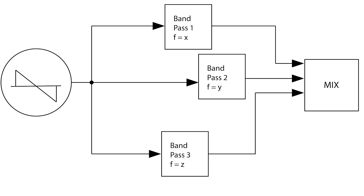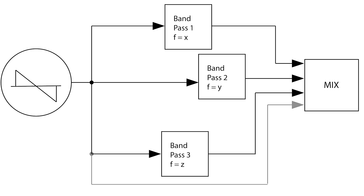In the section of his book that covers phasing, Alan Strange uses a series of bandpass filters to illustrate the concept. As he writes, a spectrally rich signal is taken in parallel to three or more bandpass filters. The filter outputs — the three pass bands — are mixed at unity gain with the original, unprocessed spectrum. Each filter must be offset to a different center frequency.